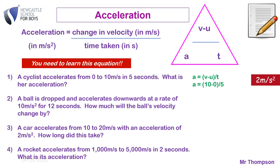Looking at the second example — this is rearranging the equation. A ball is dropped and accelerates downwards at a rate of 10 meters per second squared for 12 seconds. How much will the ball's velocity change by? The equation rearranged is: change in velocity equals acceleration times time, so it's 10 times 12. The answer is 120 meters per second. The acceleration due to gravity is 10 meters per second squared, meaning every second you fall, you increase your velocity by 10, reaching 120 meters per second after 12 seconds.